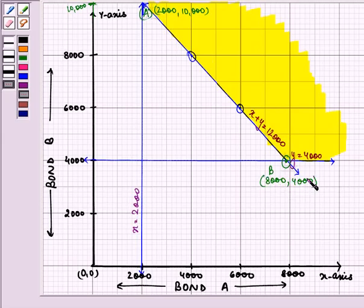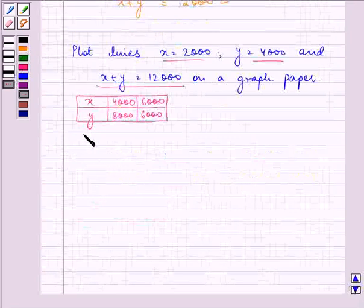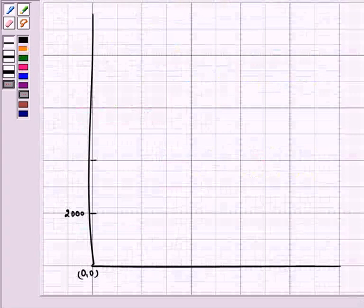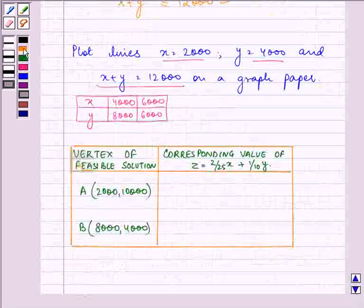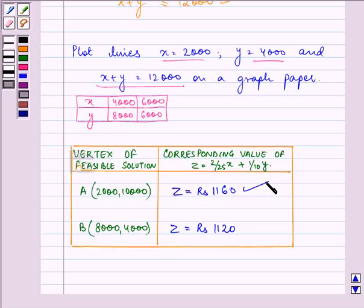Now, let us find out the corresponding value of Z at these two points. The value at point A for Z is coming out to be 1,160. And at this point, this is coming out to be 1,120. So obviously, Z is maximum when X is equal to 2,000 and Y is equal to 10,000.